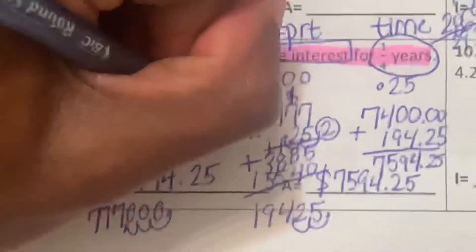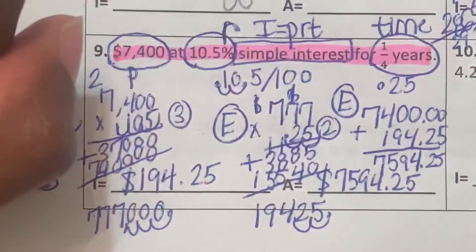So the total amount of money in the account will be $7,594.25. We evaluated. These are our evaluation steps, and we solved to find the correct answers.